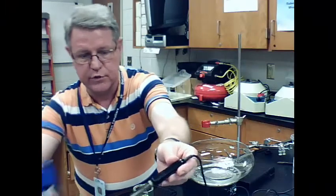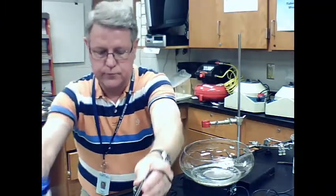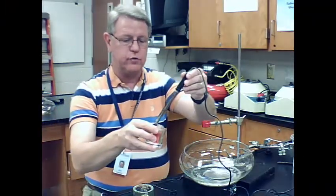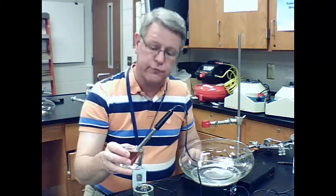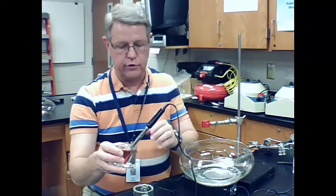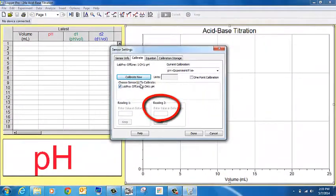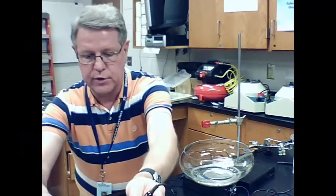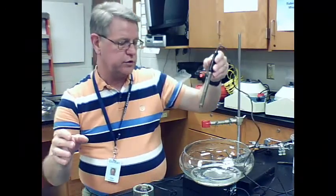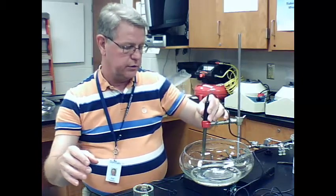Rinse it off in between. And then insert it into the pH 4. It doesn't really matter whether you put in the pH 7 or the pH 4 first, just as long as you use both of those. Enter the value of the pH for that second buffer solution in Reading 2. Press Keep. And then press Done. Then once the pH probe has been properly calibrated, we're ready to insert it back into the acid solution.